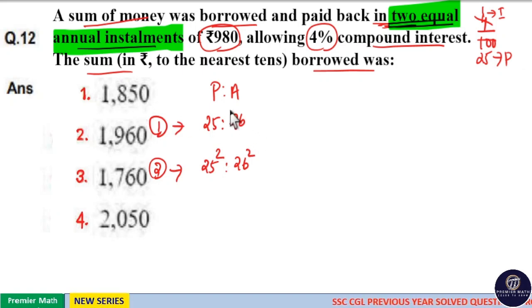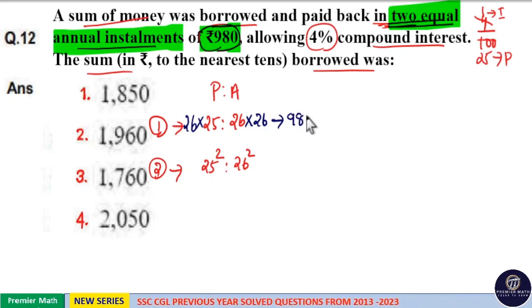So in the first year ratio I will multiply 26 with 26. Now when you multiply RHS of a ratio we should multiply LHS of the same ratio in order to equalize it. So multiply 26 in principal as well. Now question says annually equal installment is rupees 980 which means this 26 square part in the first year is 980 and in the second year this 26 square part is 980.